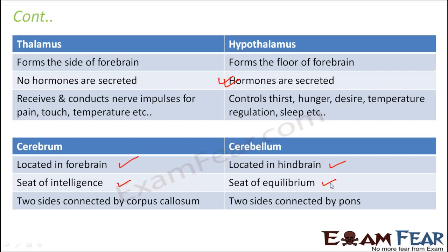In cerebrum, looking at its structure, it is divided into two cerebral hemispheres connected by a strip of nerve fibers called corpus callosum. Whereas in cerebellum, the two sides are connected by pons, which is another part of the hindbrain.